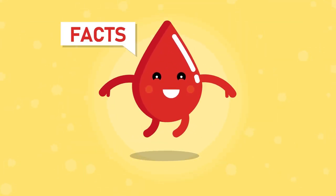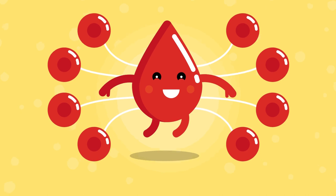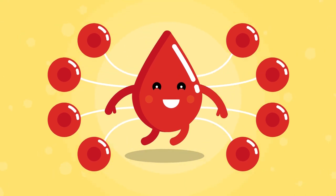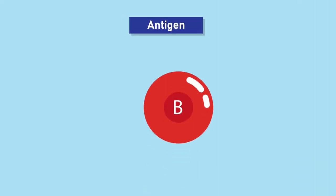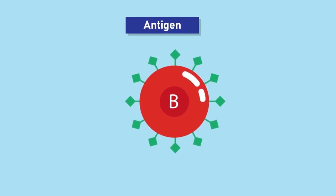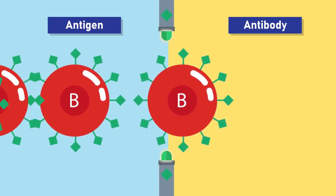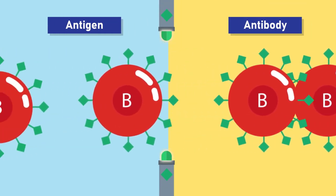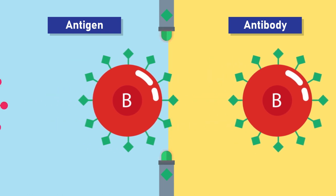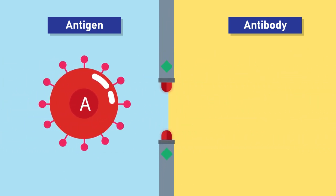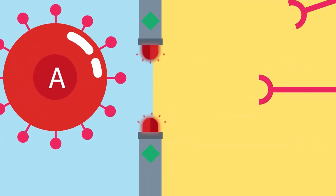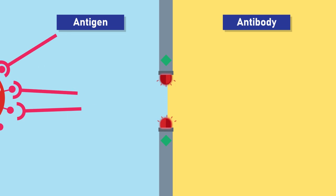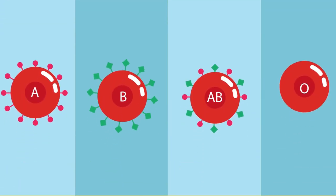Blood group facts: there are eight different common blood types, which are determined by the presence or absence of certain antigens — substances that can trigger an immune response if they are foreign to the human body. Since some antigens can trigger a patient's immune system to attack the transfused blood, safe blood transfusions depend on careful blood typing and cross-matching.